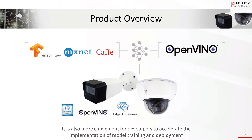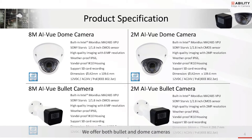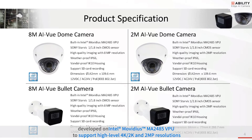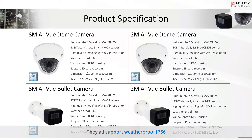ABRT offers bullet and dome type cameras designed with Intel Movidius's MA2485 VPU, supporting high-level 4K, 2K, and 2MP resolution. They all support weatherproof IP66, IK10 housing, SD card recording, and PoE power support. This makes it more convenient for developers to accelerate the implementation of model training and deployment.